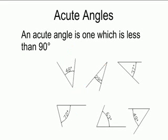Our next angles are acute angles. Acute angles are angles that are less than 90 degrees. Remember in our last lesson we looked at our protractor, and so any of those angles that are less than 90 degrees are acute angles.